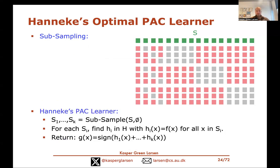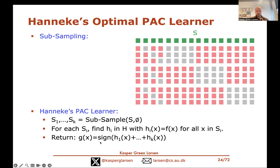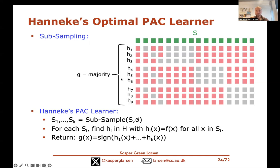Hanneke's final optimal PAC learner generates all these subsamples S_1 through S_k, and for each subsample runs empirical risk minimization — finding a hypothesis that gets all labels correct on only that subsample S_i. Crucially, you only train on the data given to you in S_i; you're not allowed to look at the gray samples left out. Finally, he combines them by majority vote: take the sign of the sum of all their predictions.